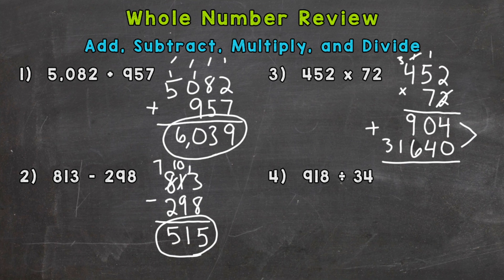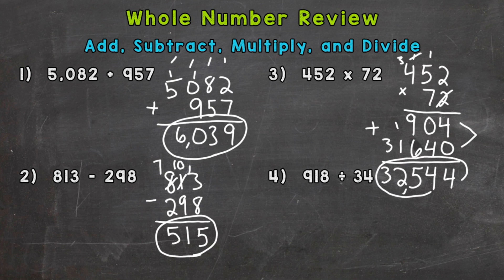I add the partial products to get my product, or answer. So: 4 plus 0 is 4. 0 plus 4 is 4. 9 plus 6 is 15 — regroup the 1. 1 plus 1 is 2. Bring down the 3. So my product — the answer to a multiplication problem — is 32,544.